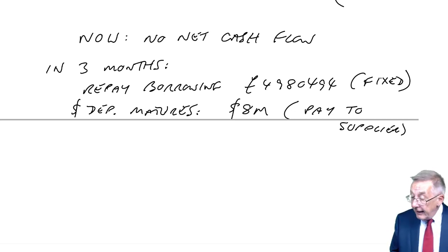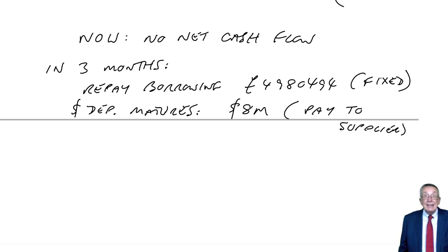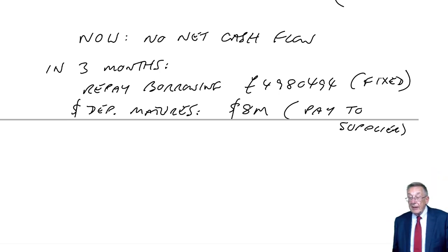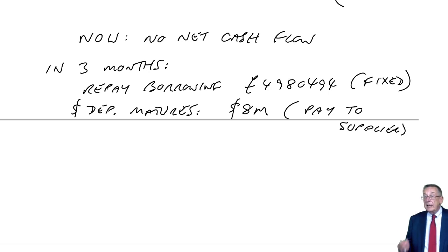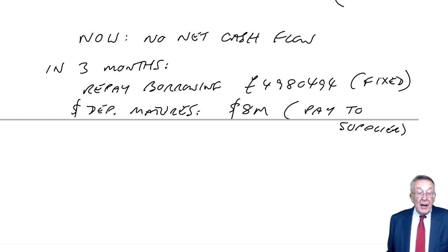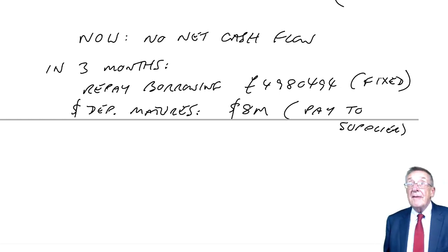So, very common in the exam — very common. And the only trouble is, even though it's taken me quite a while to explain it, by the time you come to the exam, that won't be many marks — about six marks. You've really, really got to learn it. And then it's boom, boom, boom, as fast as you can. Okay, so that's money market hedging. The next lecture, we'll look at futures, which get rather more exciting.